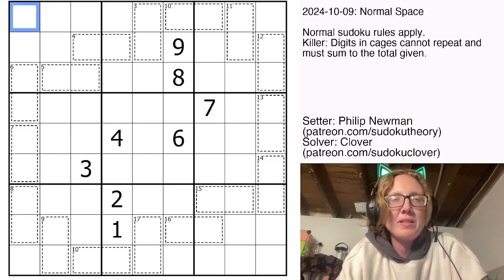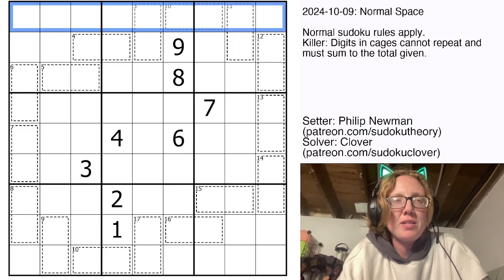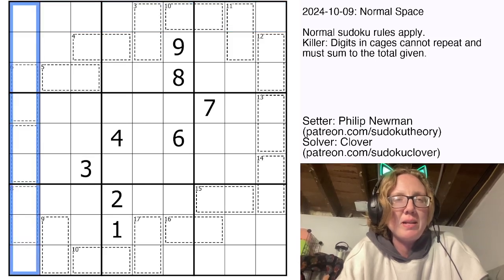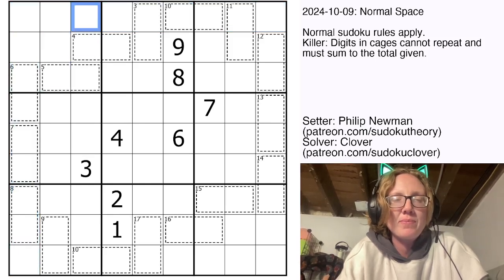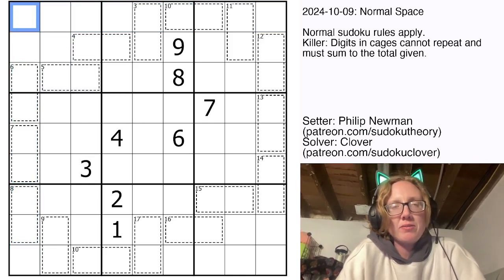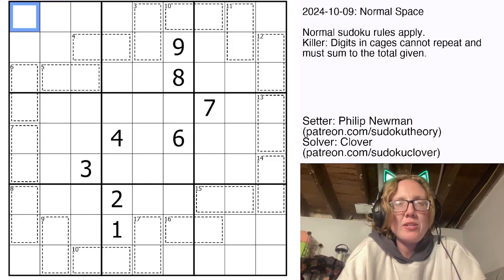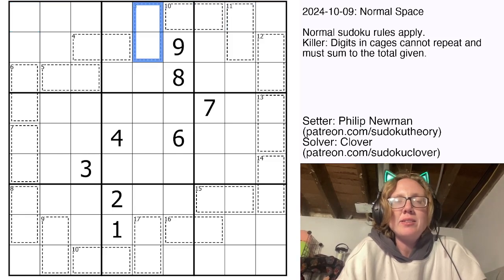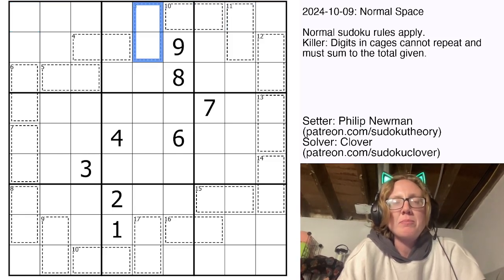So in Killer Sudoku, we're placing the digits 1 through 9, once each, in each row, each column, and each outlined 3x3 region. And then also we have some cages in the grid, and each of the cages has a clue written in its top left corner, and that clue gives you the sum of all of the numbers in the cage.